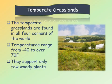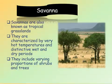Temperate grasslands support only a few woody plants. You can take a look at the picture here — you can hardly find woody plants. They are mainly grasses in the temperate grasslands.